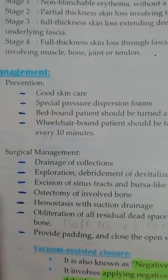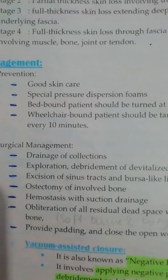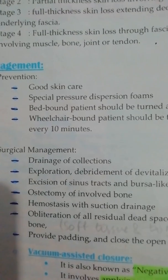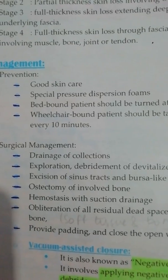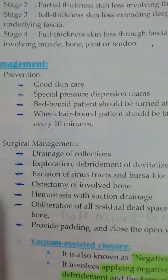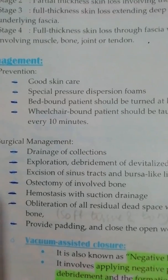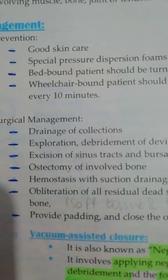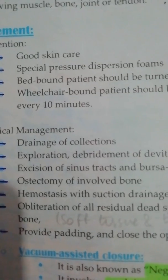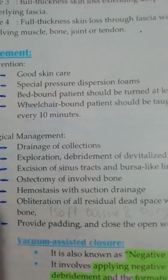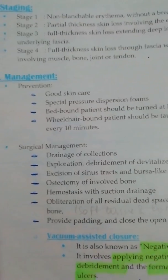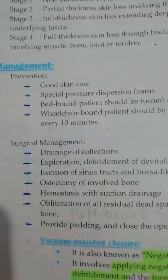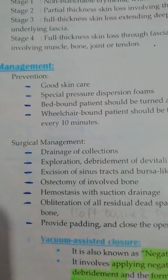Surgically, we can use ulcer drainage — if pus, sinus tracts, or blood clots are accumulated, they will be drained. Dead tissue is cleaned from the area, which we call debridement. Ostectomy refers to surgically removing bone if bone is involved. Obliteration of all residual dead space with well-vascularized tissue is performed to cover the bone, and the wound is closed with well-vascularized tissue rather than left open.